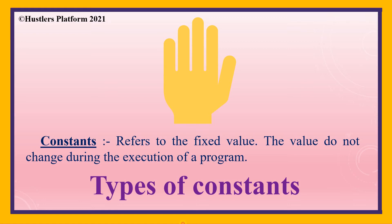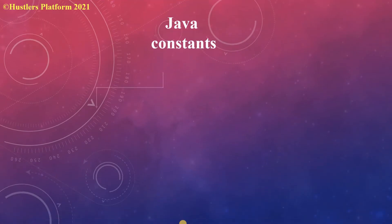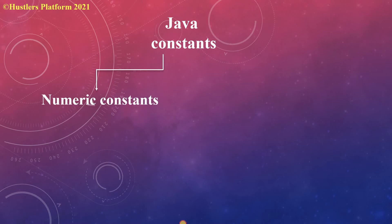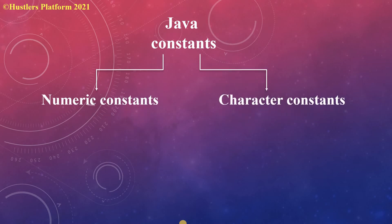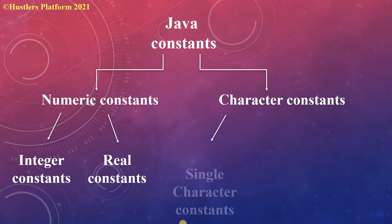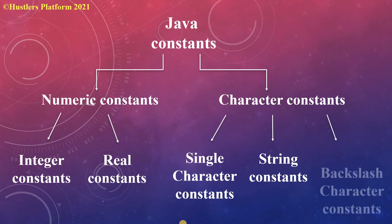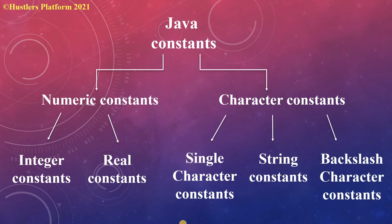In Java there are two types of constants: numeric constants and character constants. Numeric constants are further divided into two types: integer constants and real constants. Character constants are further divided into three types: single character constants, string constants, and backslash character constants. We will see all these types one by one.